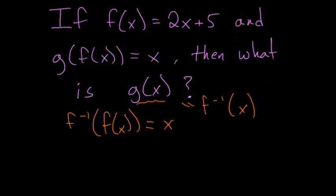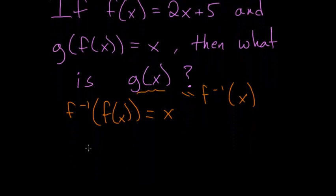And to do that, we can rewrite f of x as y is equal to 2x plus 5. And then if we switch x and y, we can then solve for the new y, which is the inverse function.